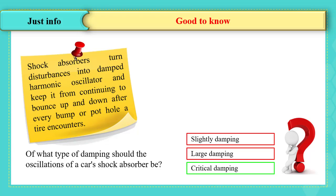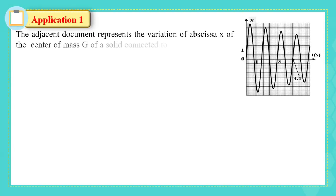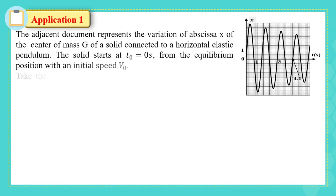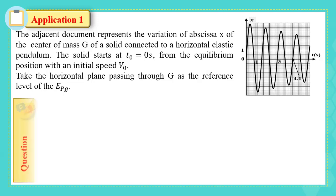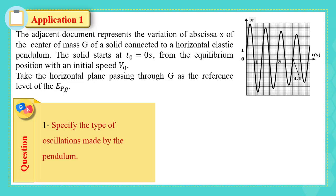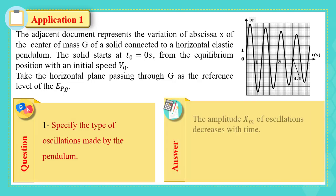Let's solve this application. The adjacent document represents the variation of abscissa x of center of mass g of a solid connected to a horizontal elastic pendulum. The solid starts at t0 equals 0 seconds from the equilibrium position with an initial speed v0. Take the horizontal plane passing through g as the reference level of the gravitational potential energy. Specify the type of oscillations made by the pendulum. The amplitude xm of oscillations decreases with time. Then, the oscillations are free damped.